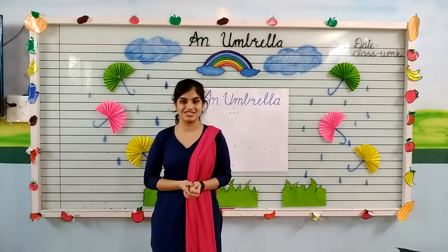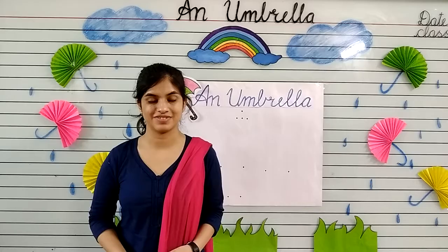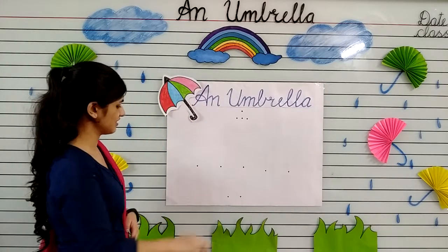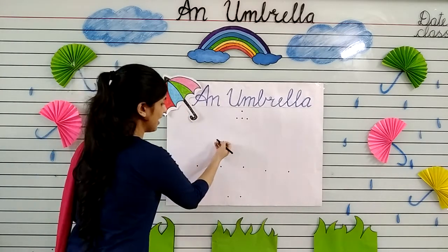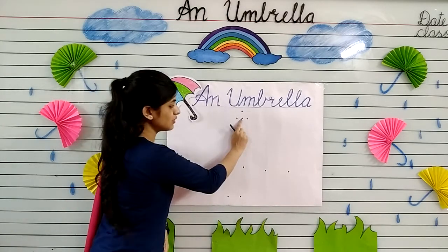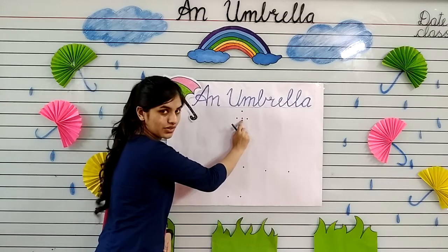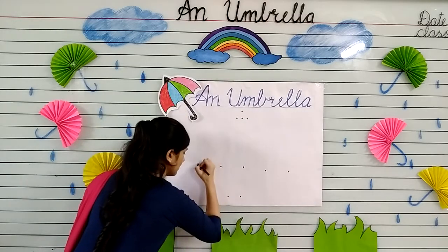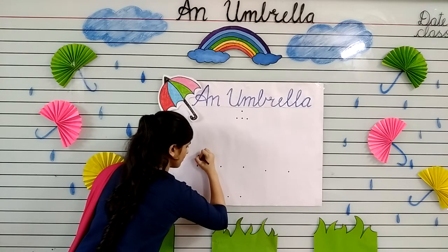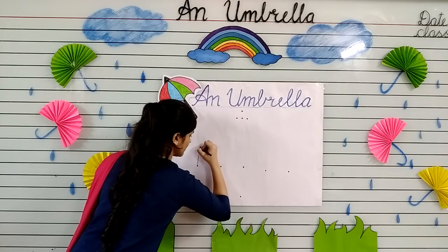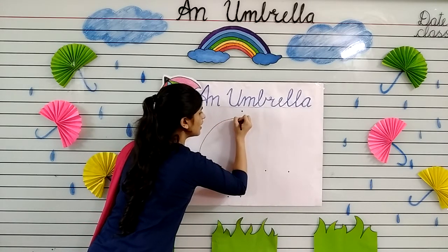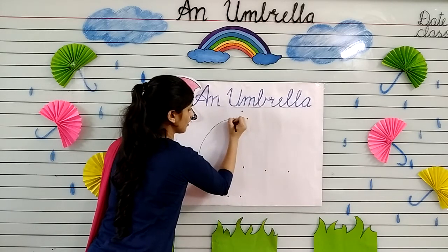Now let's start drawing. Kids, take out your black crayon and put at this dot and make a curve line joining this dot to this dot — the center one. Now put your crayon at this dot and make a curve. Draw with me kids. Like this, and make a curve.